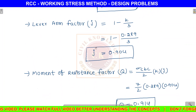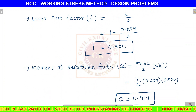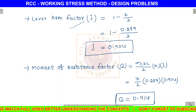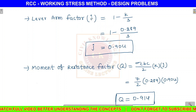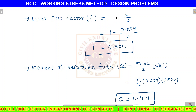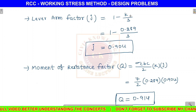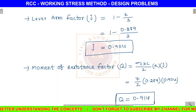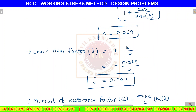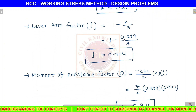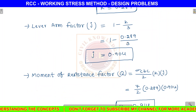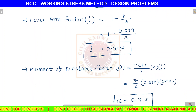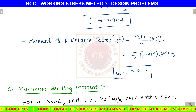Next design constant: lever arm factor J. The formula is J = 1 − K/3. Substituting K = 0.289: J = 1 − 0.289/3 = 0.904.